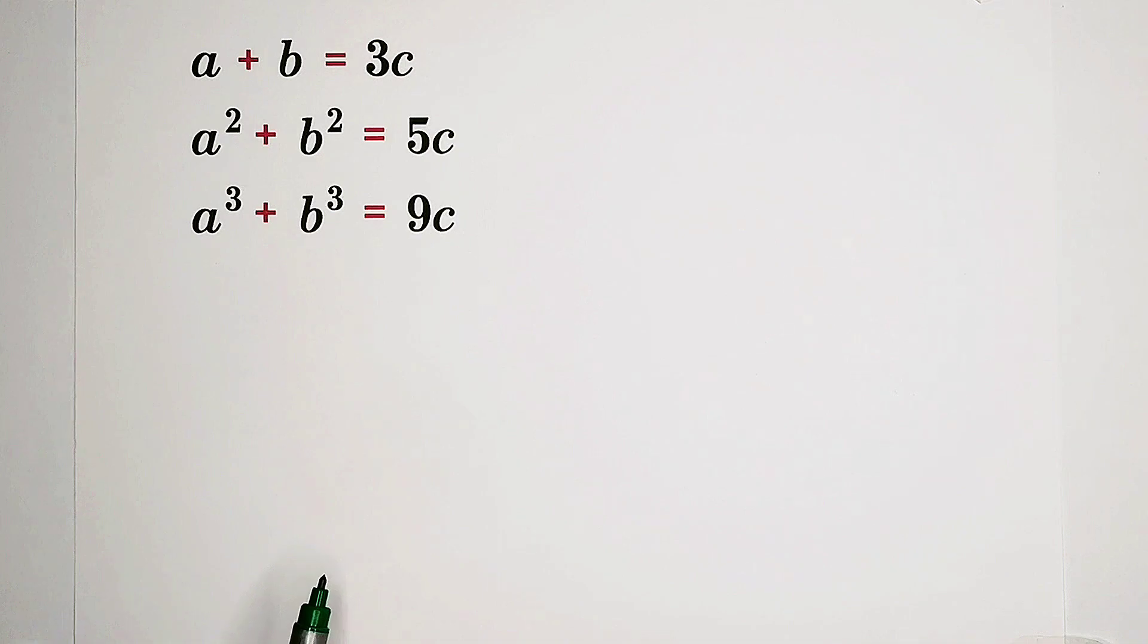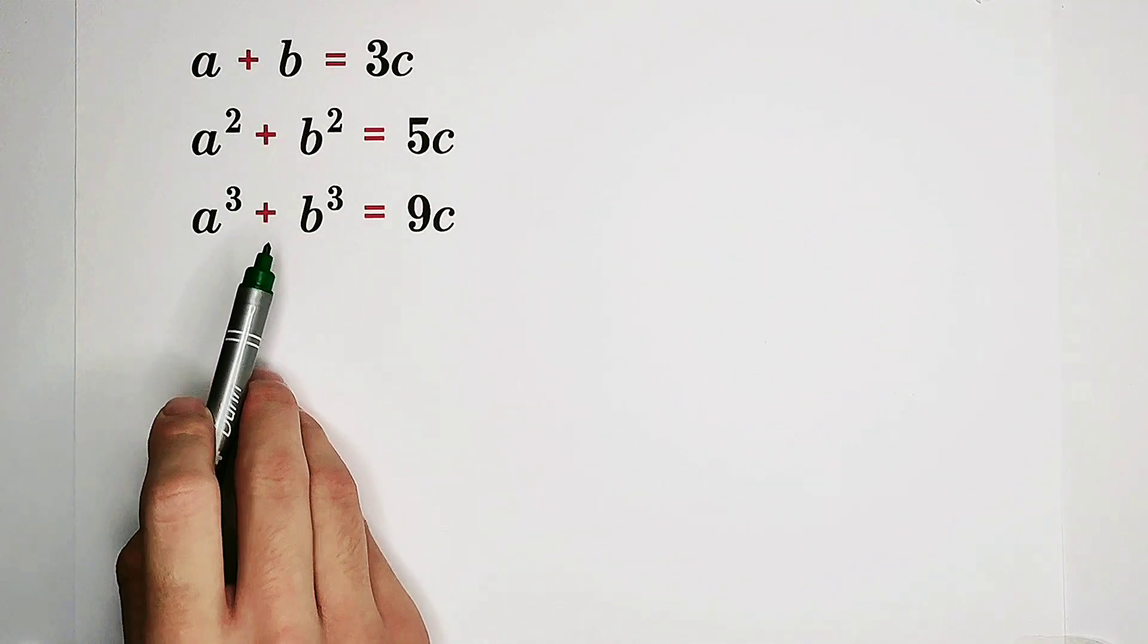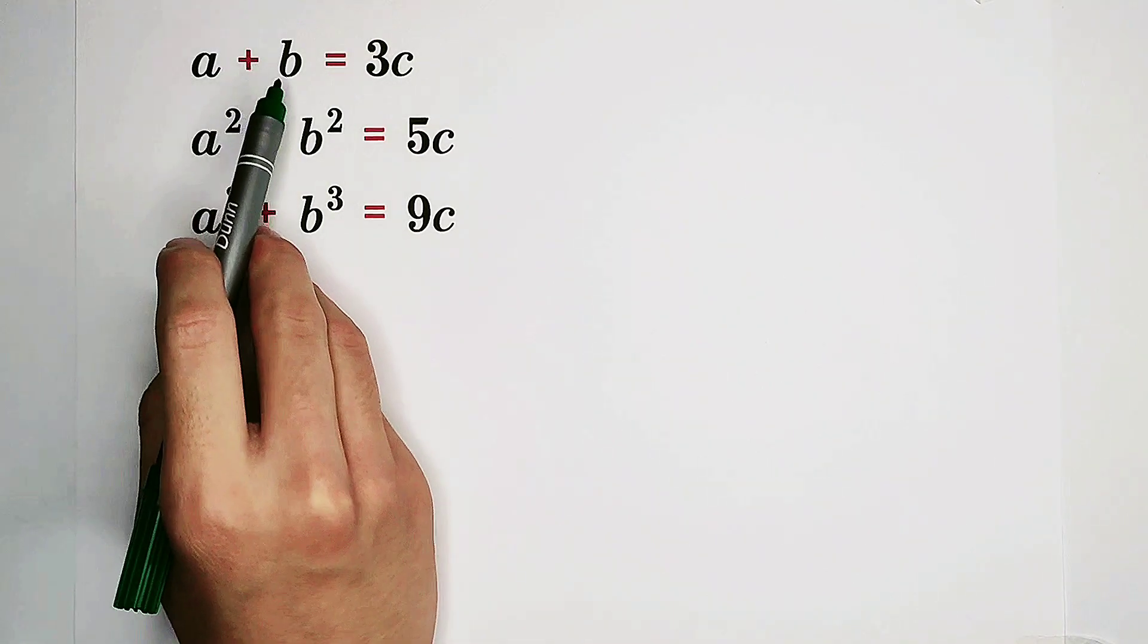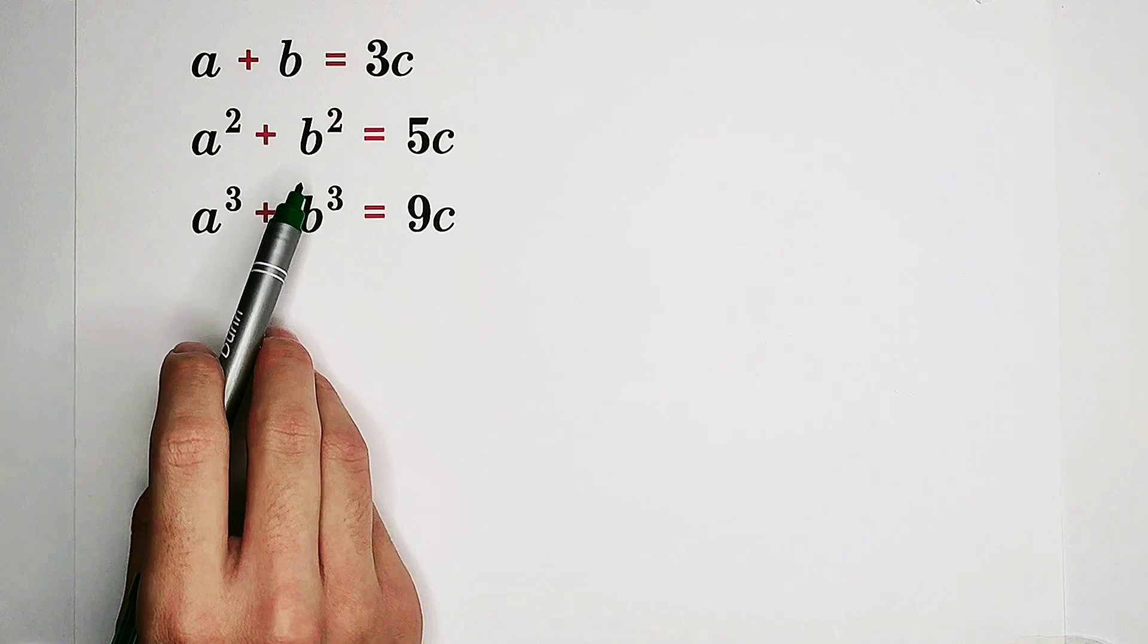Now, let's solve it. But how? We have to find the relationships among these three left-hand sides. The first one is a plus b and a squared plus b squared. What's their relationship?